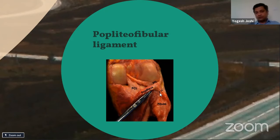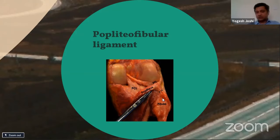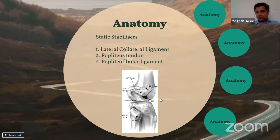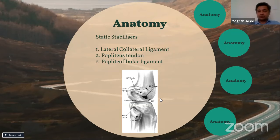The popliteofibular ligament is a very thick ligament running from the musculotendinous junction of the popliteus tendon to the tip of the fibula. It has been divided into a posterior part and an anterior part. The anterior part goes to the anterior part of the fibula, while the posterior part attaches to the tip of the fibula. This is important in the way we reconstruct the popliteofibular ligament. In summary, the three static stabilizers are the lateral collateral ligament, the popliteus tendon, and the popliteofibular ligament.